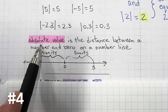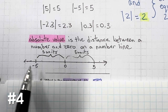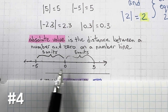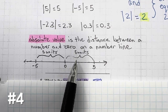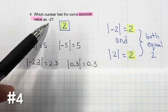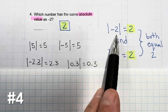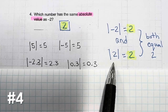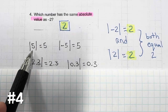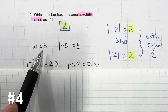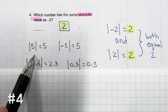Looking at the definition of absolute value: absolute value is the distance between a number and 0 on a number line. So 0 and negative 5, and 0 and positive 5, are both 5 units away from 0. What has the same distance from 0 as negative 2? That would be 2, because the absolute value of negative 2 is 2, and the absolute value of 2 is 2 — they both equal 2. Same with absolute value of 5 and absolute value of negative 5 — both are 5 units away from 0.